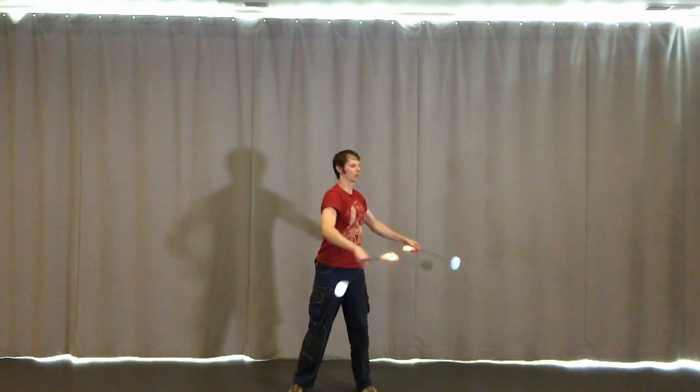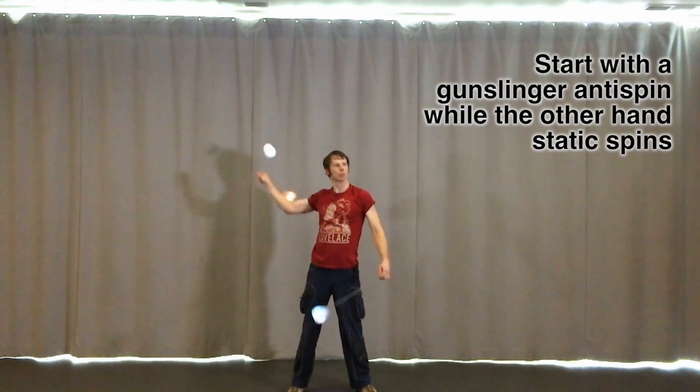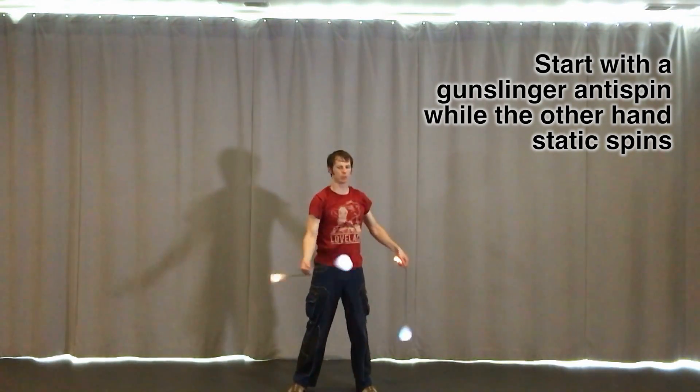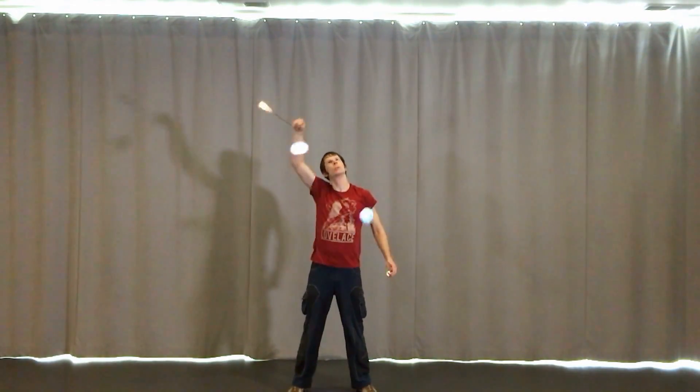Let's try combining that 10 petal anti-spin flower with a standard 4 petal anti-spin flower in our other hand. The first step is actually going to be just performing the gunslinger anti-spin while our other hand sits there on wall plane doing a static spin. Even this can take a little bit of training to keep stable, but once it does start to feel natural, you can start to build to a full flower.